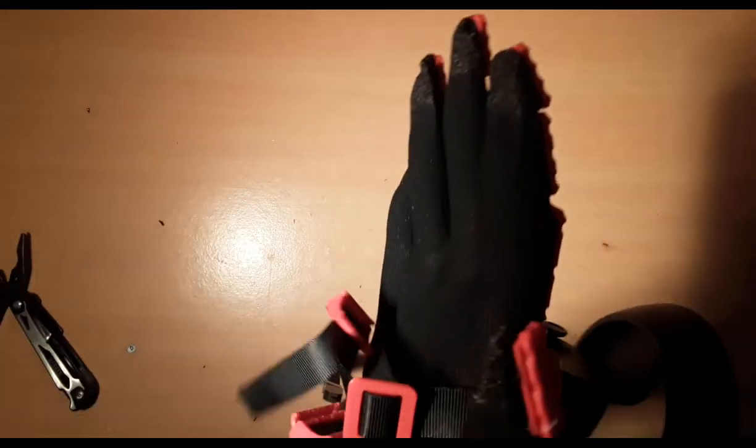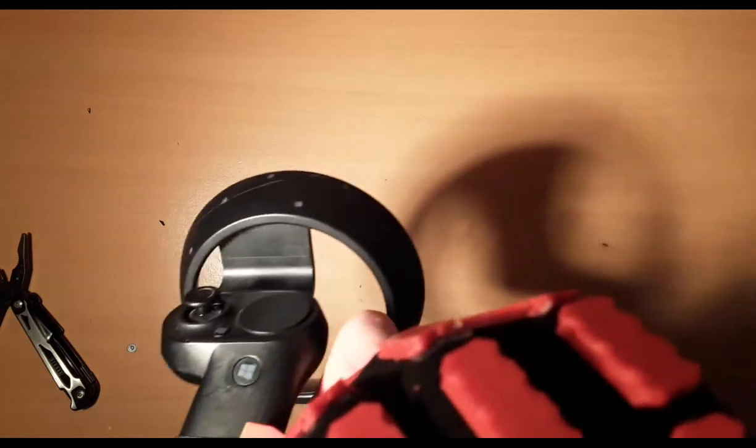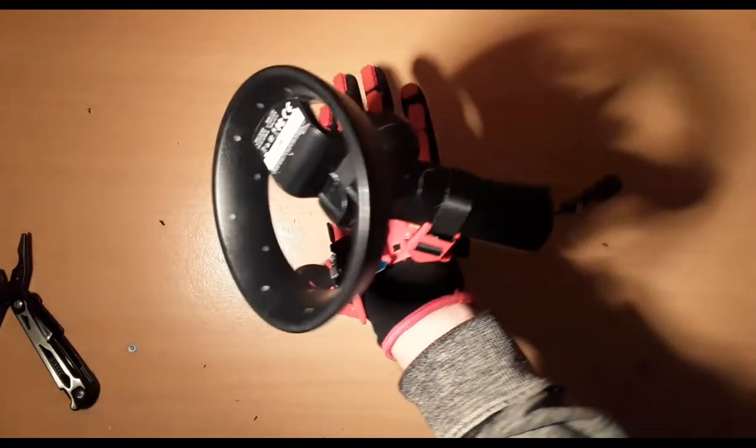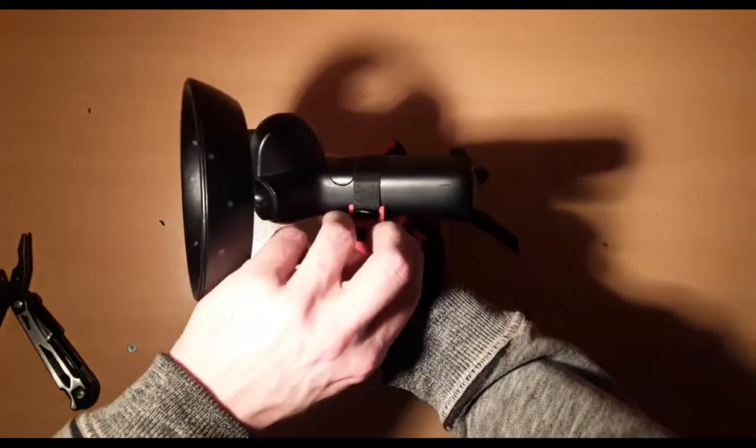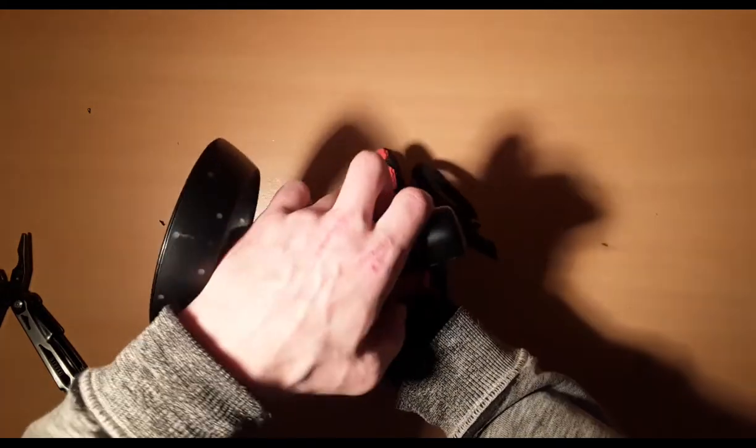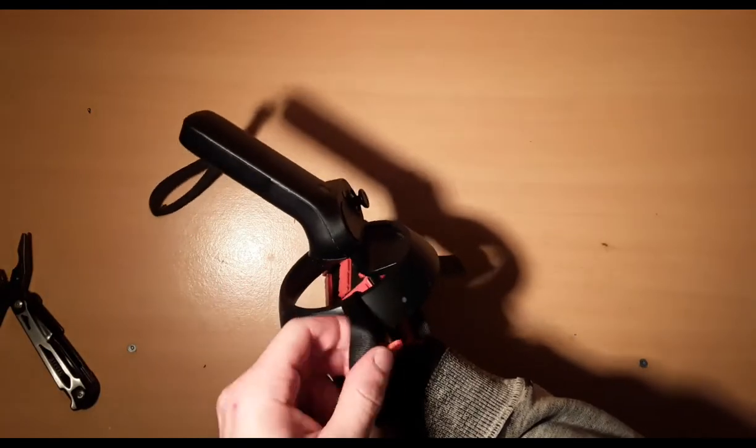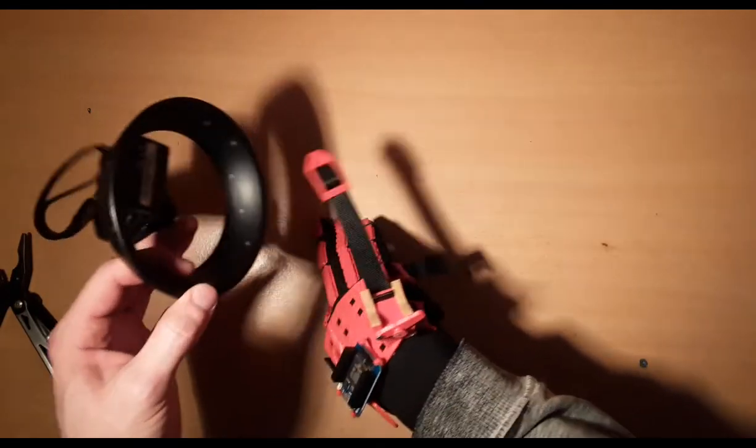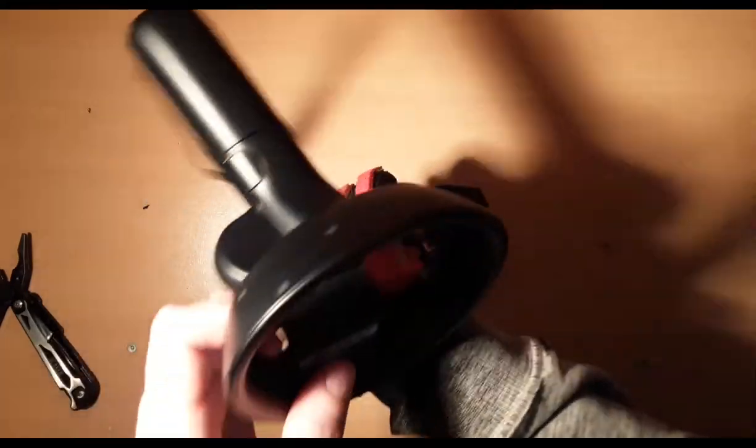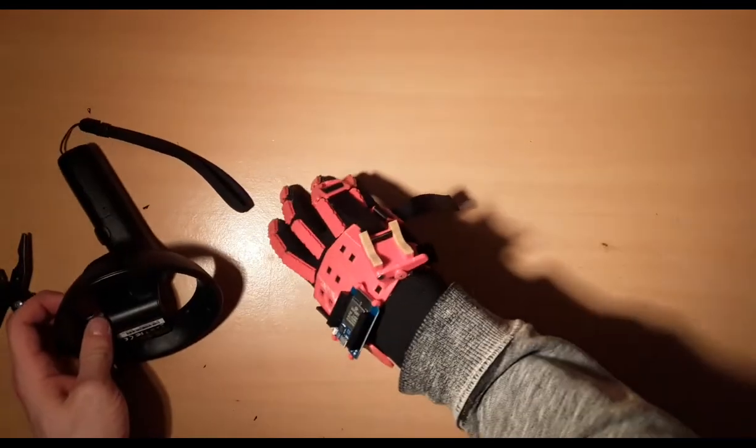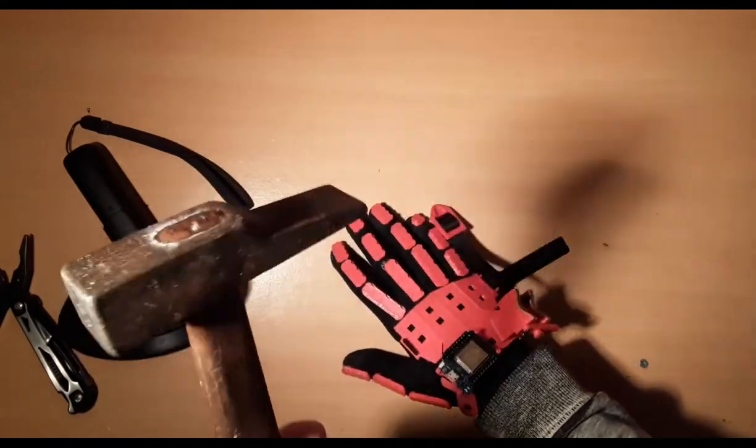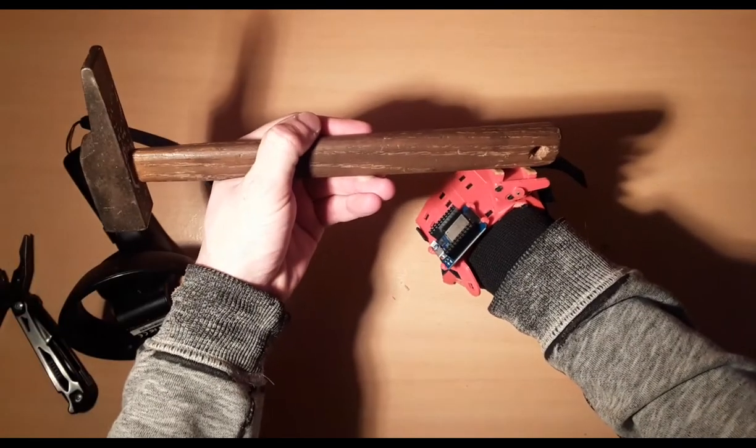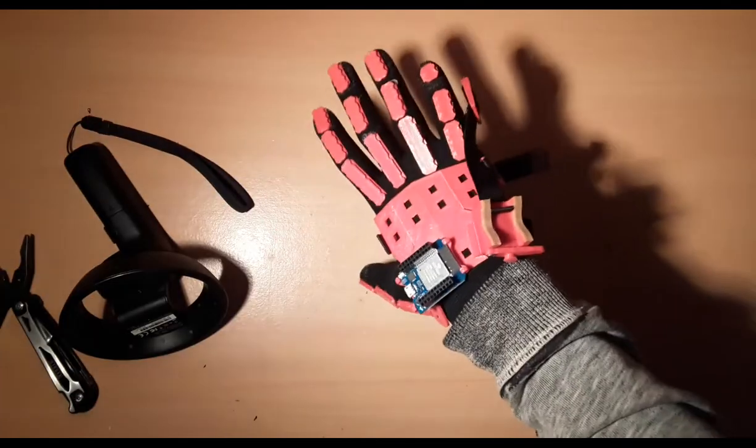And there you have it, the universal controller mount. Good thing with this is that you don't have to put it the way I did. You could put it through the loop, like this, or whichever way you want. Basically you can hold on to any shape, even a hammer if you want. That's how I tested the first one, with a hammer, like this. And it worked really well. Anyway, that's about it for this video.